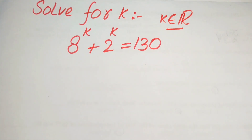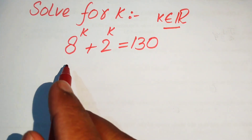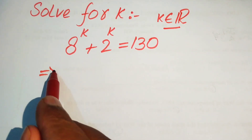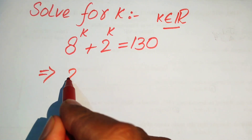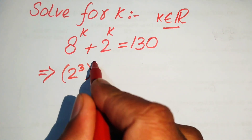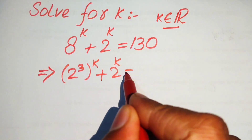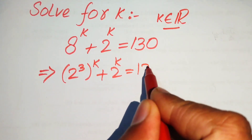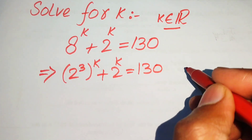The very first step we are going to do is write 8 into its prime factors form. We know that the prime factors of 8 are 2 cubed, so we have 2 cubed to the power of k plus 2 to the power of k equals 130.